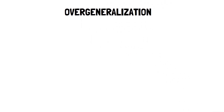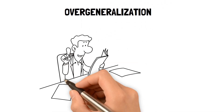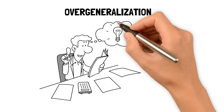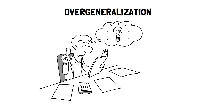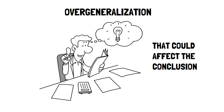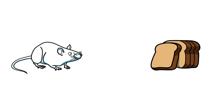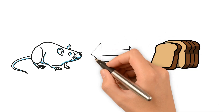Overgeneralization occurs when a person draws a conclusion based on limited evidence or experience, without considering other factors or contexts that could affect the conclusion. The false cause is when a person assumes that because two things happen together, one must have caused the other.